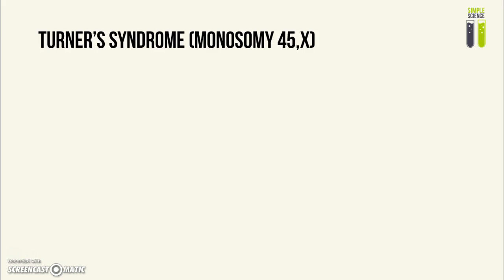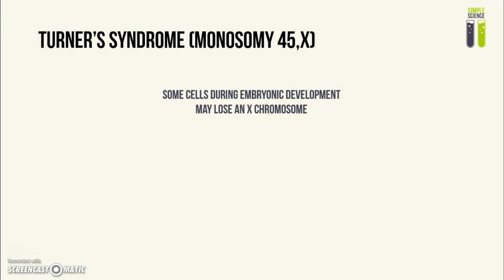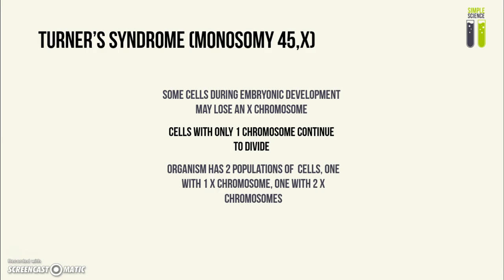This can also have implications on monosomic disorders. For this example, I'm going to use Turner's syndrome. This applies only for mitotic errors during the embryonic development of a normal zygote — meaning a zygote that has two X chromosomes — not when Turner's syndrome is caused by non-disjunction during meiosis in one of the parents. Some cells during embryonic development can lose one X chromosome, and then those cells with one X chromosome continue to divide by mitosis, giving a mosaic of cells with only one X chromosome and cells with two X chromosomes.